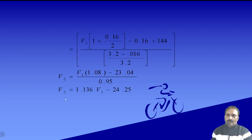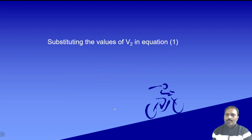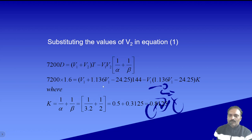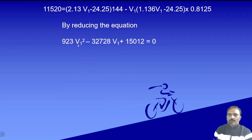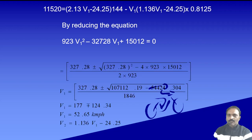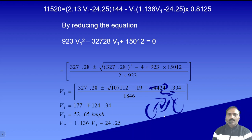Substituting the known values we get v2 = 1.136·v1 - 124.25 as Equation 2. Substituting this expression for v2 into Equation 1, we get a quadratic equation in terms of v1. Solving using the quadratic formula (-b ± √(b²-4ac)) / 2a, we get v1 = 52.65 kmph. Substituting back gives v2. Then: t1 = v1/alpha, t2 = (v1 - v2)/beta-c, and t3 = v2/beta.